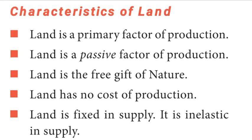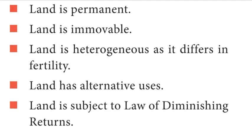Characteristics of land: Land is a primary factor of production. Land is a passive factor of production — it doesn't produce anything alone and needs the help of labor, capital and organization. Land is the free gift of nature. Land has no cost of production. Land is fixed in supply — it is inelastic in supply. Land is permanent. Land is immobile. Land is heterogeneous or diversified, as it differs in fertility. Land has alternative uses. Land is subject to the law of diminishing returns.